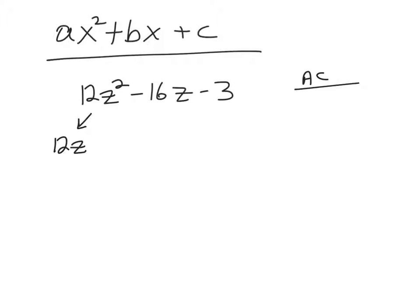The first term stays the same. Leave 12z squared alone. The last term stays the same. Leave negative 3 alone. What we're going to do is we're going to rewrite this negative 16z. Now, how are we going to do that? We're going to write it as two numbers that add up to negative 16. It might be negative 8 and negative 8. It might be negative 9 and negative 7. It might be plus 4 and minus 20. It could be a whole bunch of different things. There's going to be two numbers that add up to negative 16 to make that negative 16z.